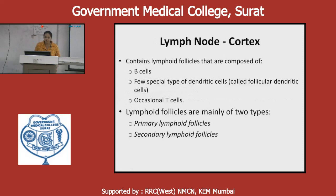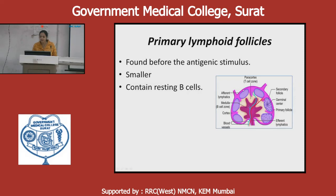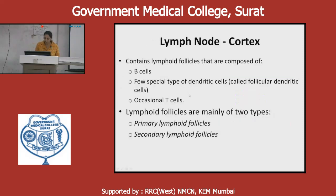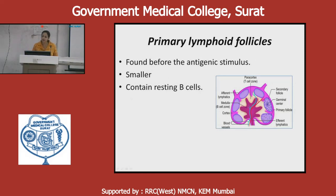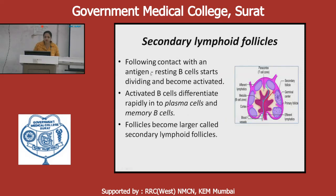The cortex of the lymph node contains lymphoid follicles composed of B cells, few special types of dendritic cells, and occasionally T cells. There are two types of follicles: primary and secondary lymphoid follicles. Primary lymphoid follicles are found before antigenic stimulus — resting B cells are present, smaller in size. Following contact with an antigen, resting B cells start dividing, become activated, and differentiate rapidly into plasma cells and then memory B cells. The follicles then become large and are called secondary lymphoid follicles.